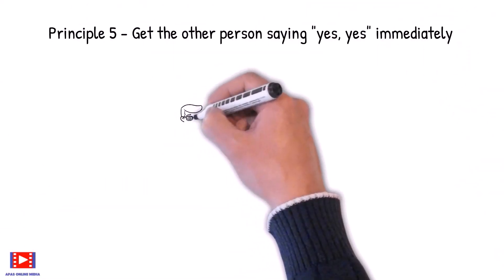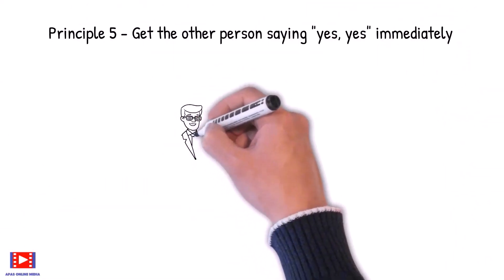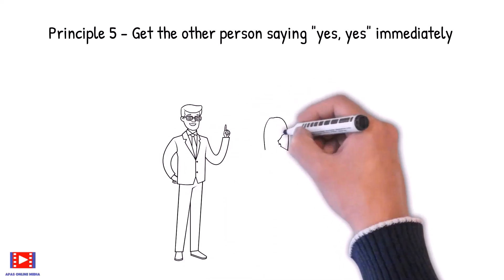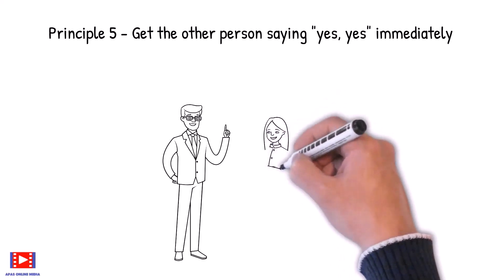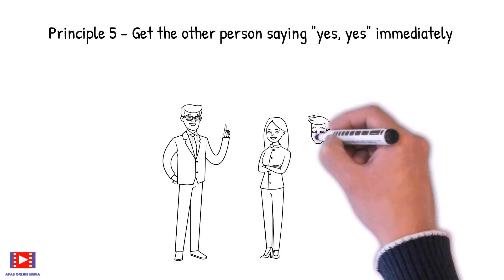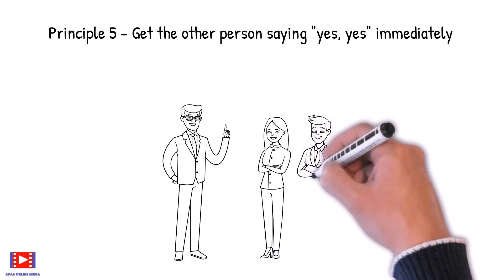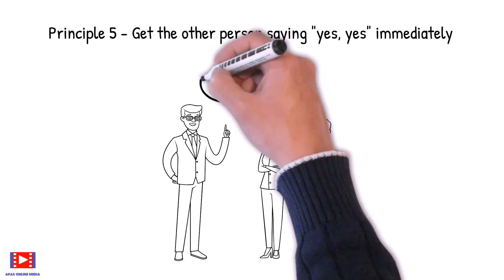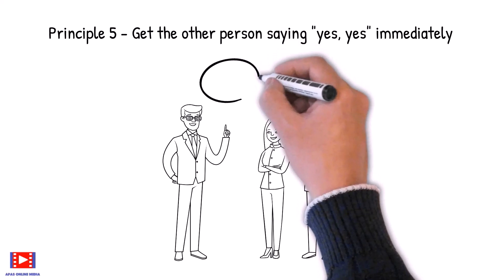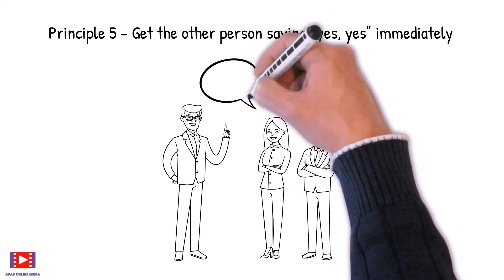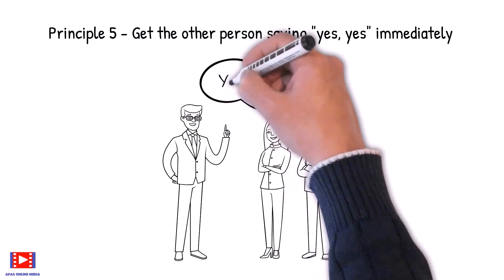Principle 5: Get the other person saying yes, yes immediately. In talking with people, don't begin by discussing the things on which you differ. Begin by emphasizing and keep on emphasizing the things on which you agree. Keep emphasizing if possible that you are both striving for the same end and that your only difference is one of method and not of purpose.